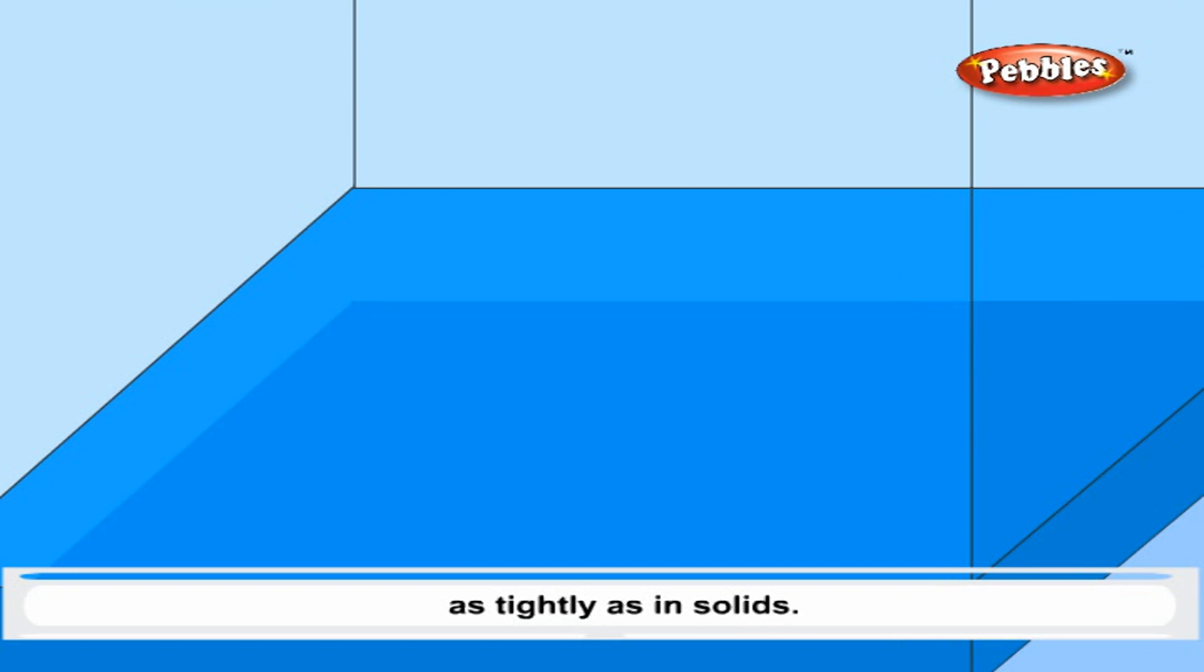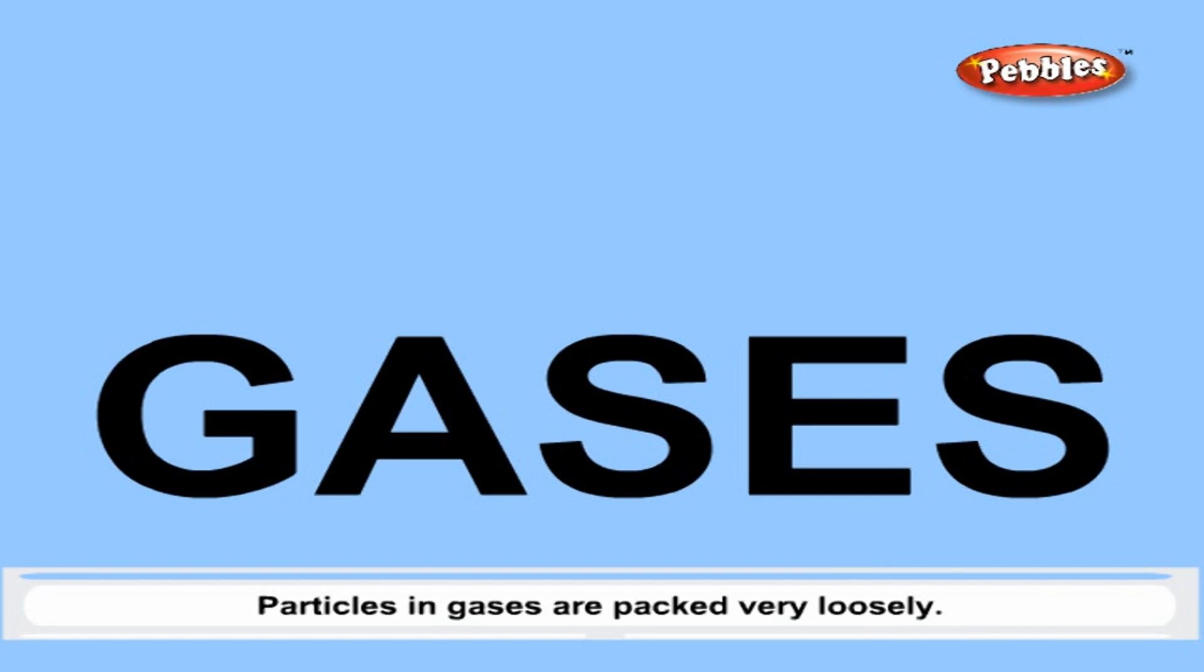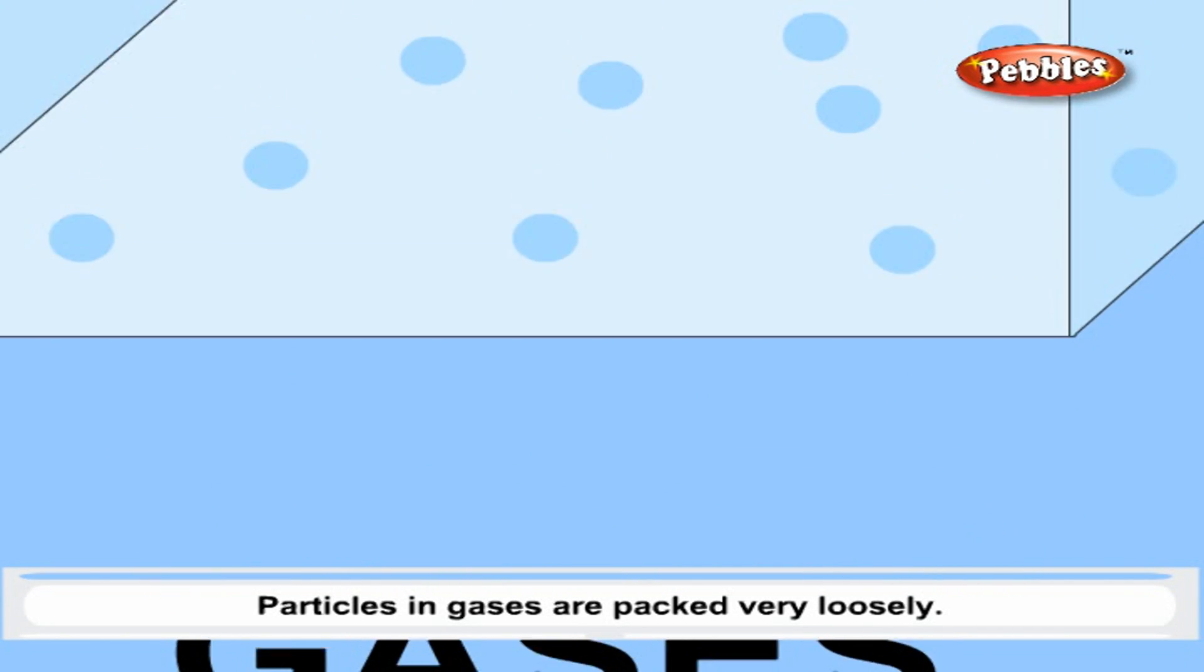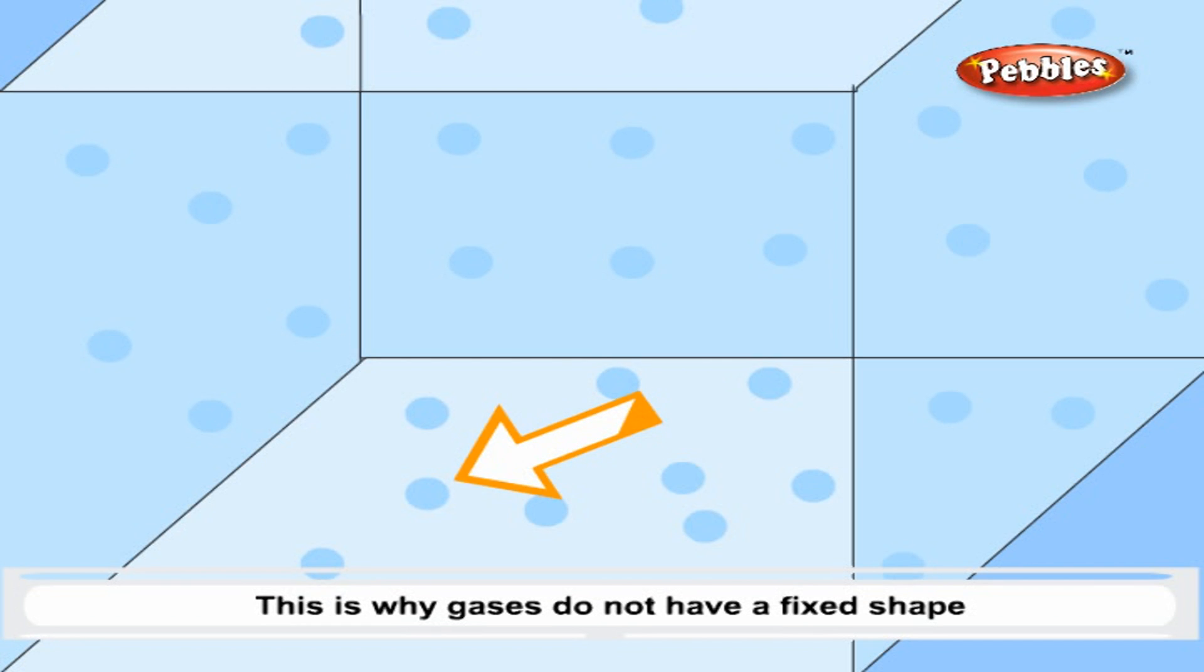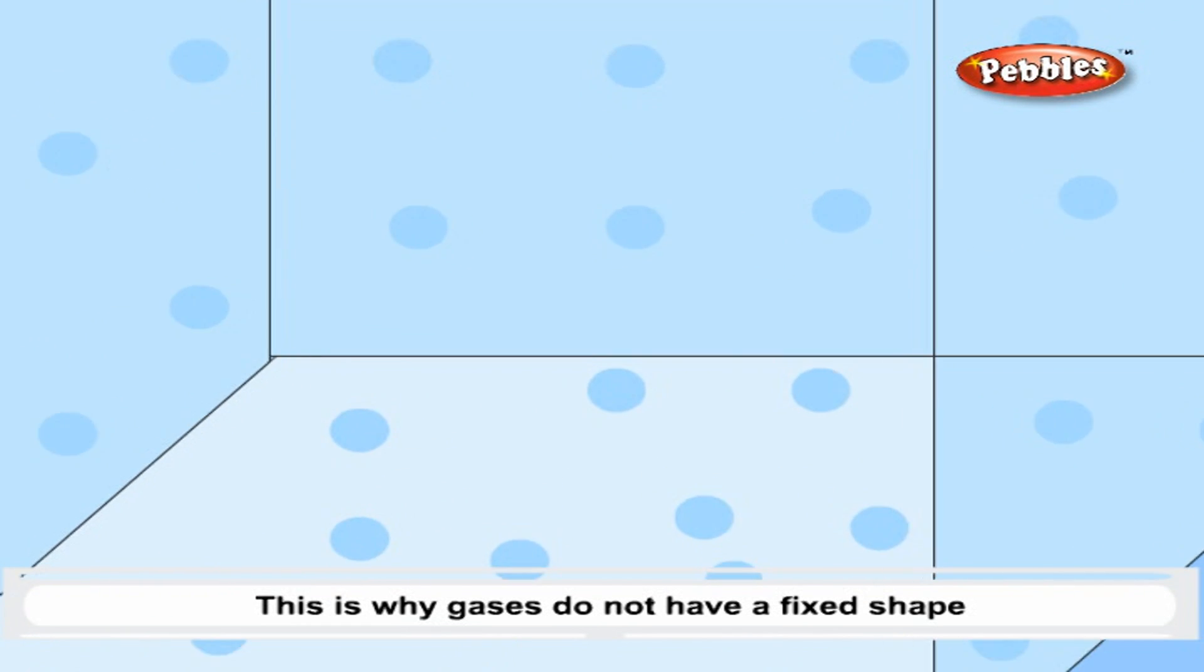Gases. Particles in gases are packed very loosely. This is why gases do not have a fixed shape and can flow very easily.